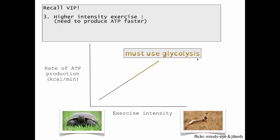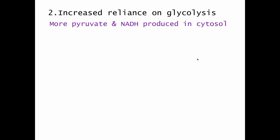Recall, higher intensity exercise, we need to produce ATP faster. This is going to rely more on carbohydrate because glycolysis uses glucose and glycogen, and this is going to increase the speed of glycolysis. If we rely more on glycolysis, the products of glycolysis, pyruvate and NADH, are going to be present in greater concentration in the cell.